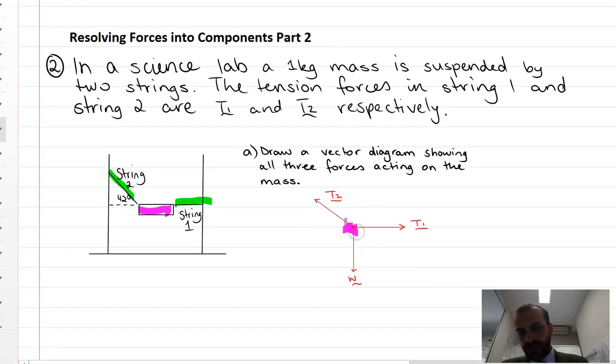This is our one kilogram weight. There is tension here. There is tension here with the strings and there is a weight acting upon it. Okay, so there's our vector diagram, three forces acting on it. Let's keep going.